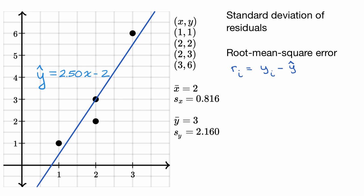For example, and we've done this in other videos, the residual here when x is equal to one: we have y is equal to one, but what was predicted by the model is 2.5 times one minus two, which is 0.5. So one minus 0.5, this residual is equal to 0.5, and it's a positive 0.5.